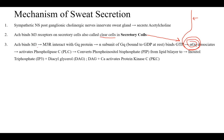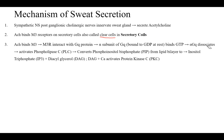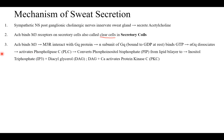Acetylcholine binds M3 receptors, which interact with the GQ protein. The alpha subunit of GQ, which was bound to GDP at rest, now binds GTP. The alpha-GQ subunit dissociates and activates phospholipase C. Phospholipase C breaks down PIP2 from the lipid bilayer into inositol triphosphate (IP3) and diacylglycerol (DAG). DAG plus calcium later activates protein kinase C, which has various physiological functions.